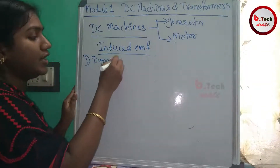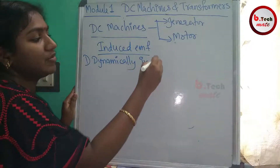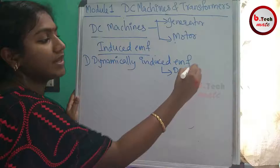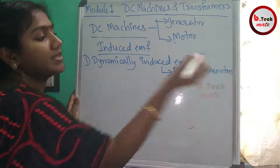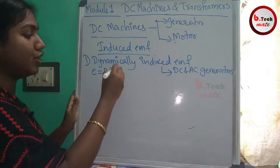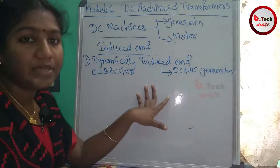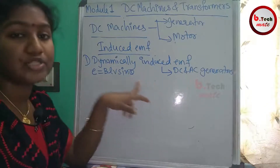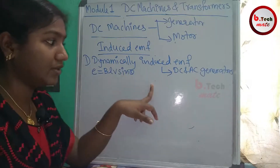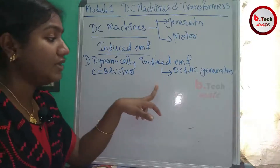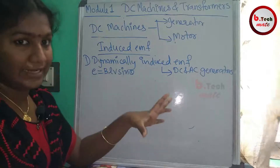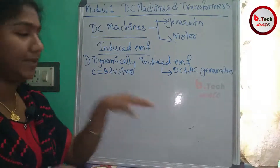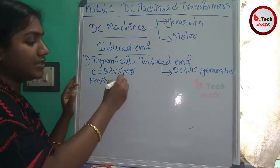There are two types of induced EMF. The first is dynamically induced EMF, which is seen in DC and AC generators. Dynamically induced EMF = BLV sinθ. This EMF is induced when a moving conductor cuts the magnetic flux — the conductor must be moving. This is the example of dynamic induction in DC and AC generators.